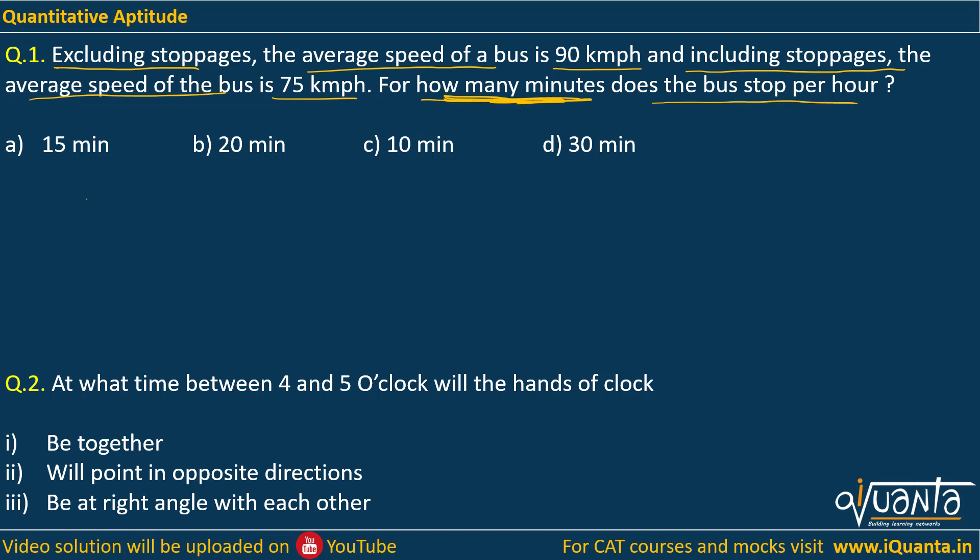only calculate how many minutes the bus stops per hour when we have the stoppage time. Now how to calculate the stoppage time? We know that normally the bus is going at 90 kilometers per hour when there are no stoppages, or we can say that it is covering 90 kilometers in one hour.